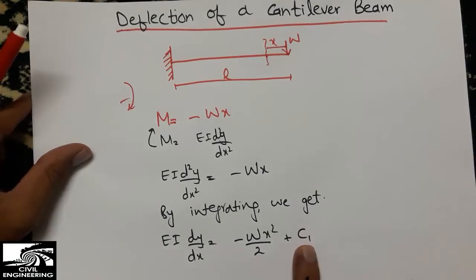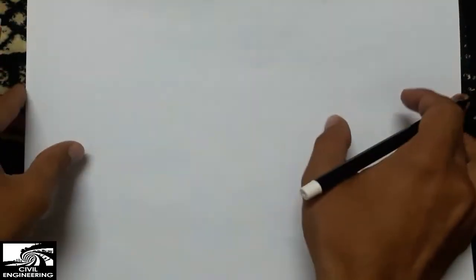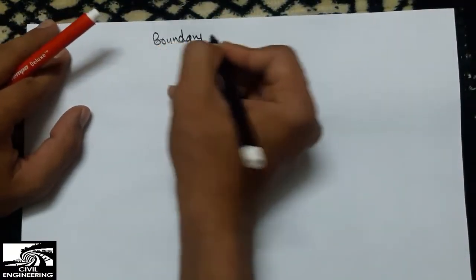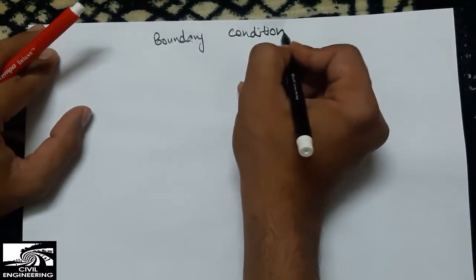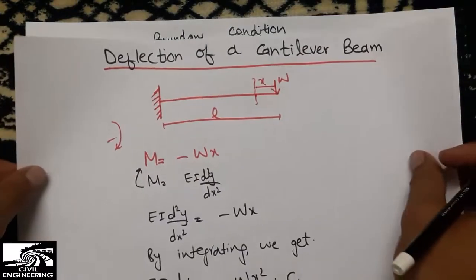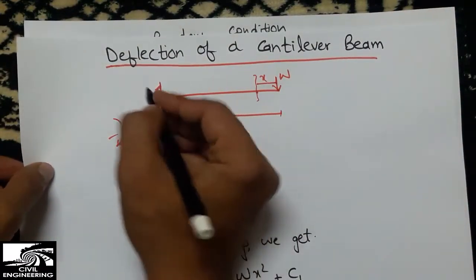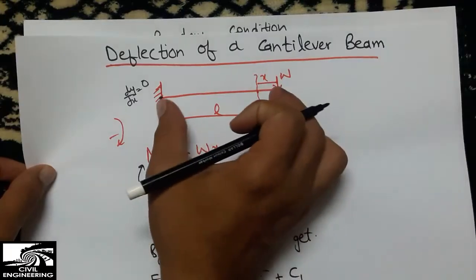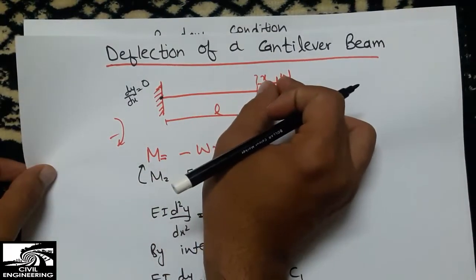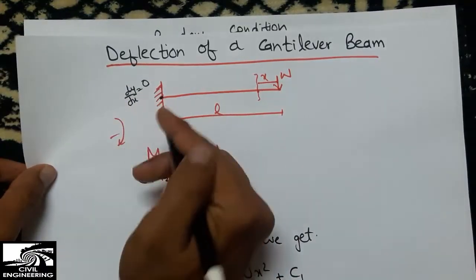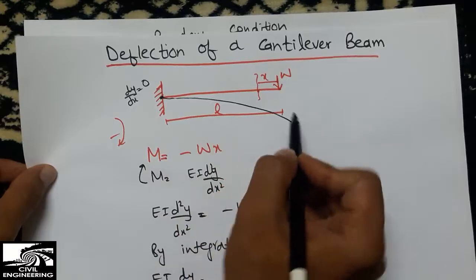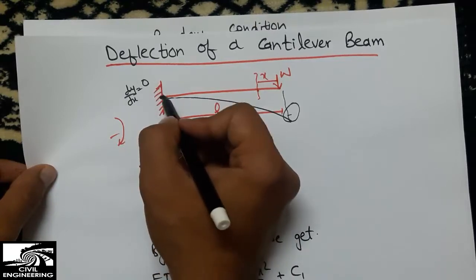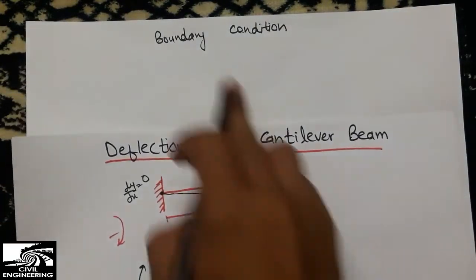We will apply the boundary condition to find this constant. The boundary condition is that at the fixed support, the slope dy/dx will be zero. This occurs at x equals L, because at the fixed support there is no slope and no deflection. So at x equals L, dy/dx equals zero.